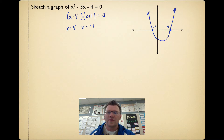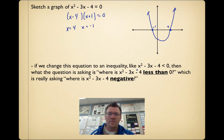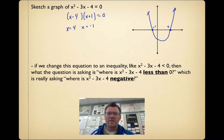You need to know what a sketched parabola looks like so we can actually answer inequalities with quadratics. If we change this equation to an inequality — x squared minus 3x minus 4 is less than 0 — then the question is really asking: where is x squared minus 3x minus 4 less than 0? That is, where is it going to be negative?